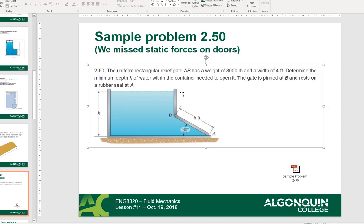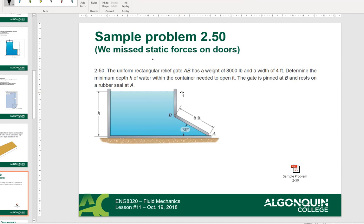So 2-50: the uniform rectangular relief gate AB has a weight of 8,000 pounds and a width of 4 feet. That's 4 feet into the page or into the screen. Determine the minimum depth h of water within the container needed to open it, so you want to open it. So how much force - it's hinged here - how much water is going to open this gate? Basically overcome the force of gravity, this 8,000 pounds. The gate is pinned at B and rests on a rubber seal at A.